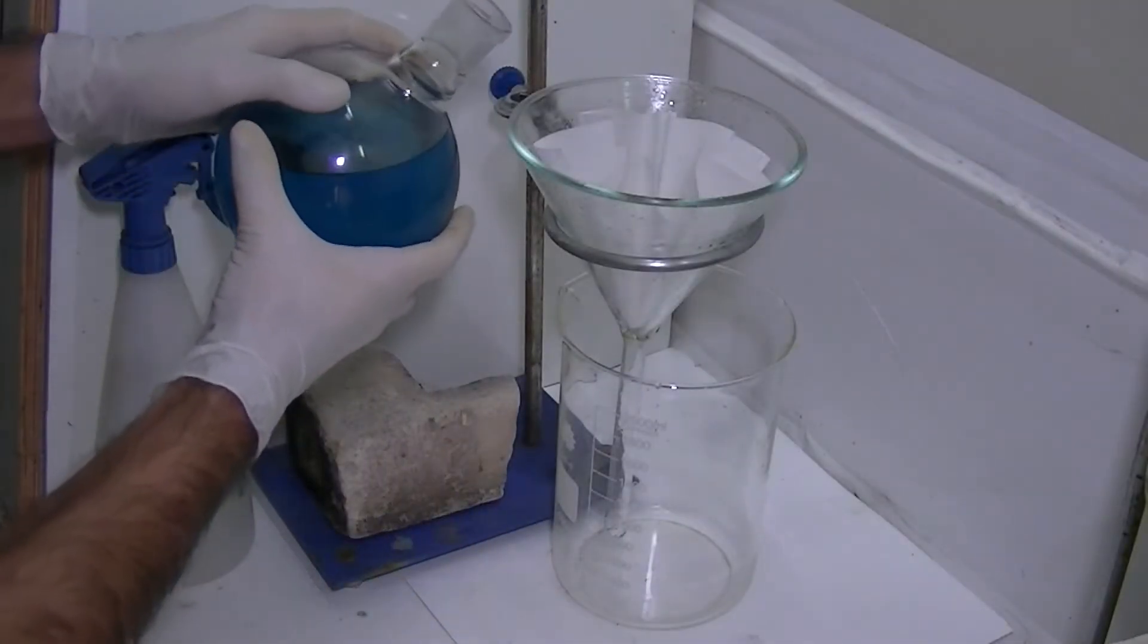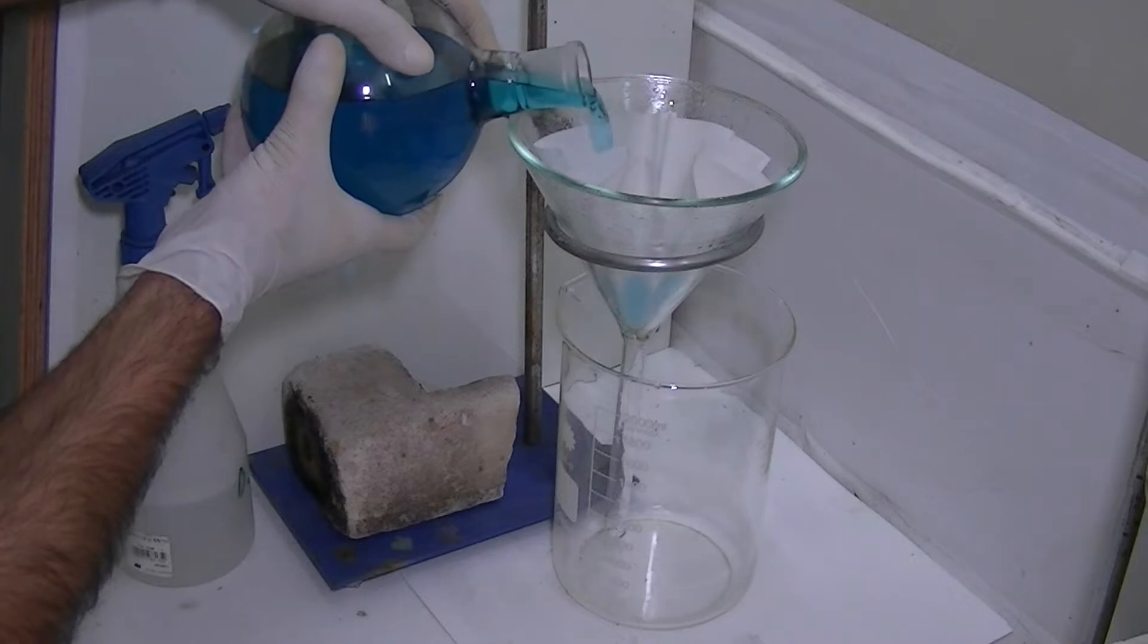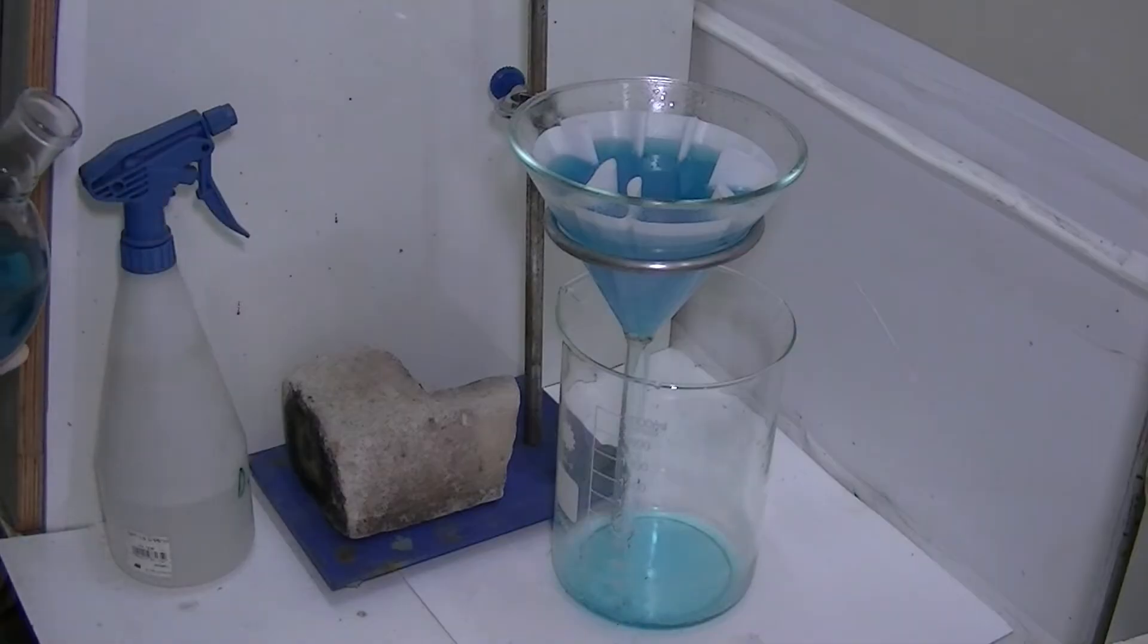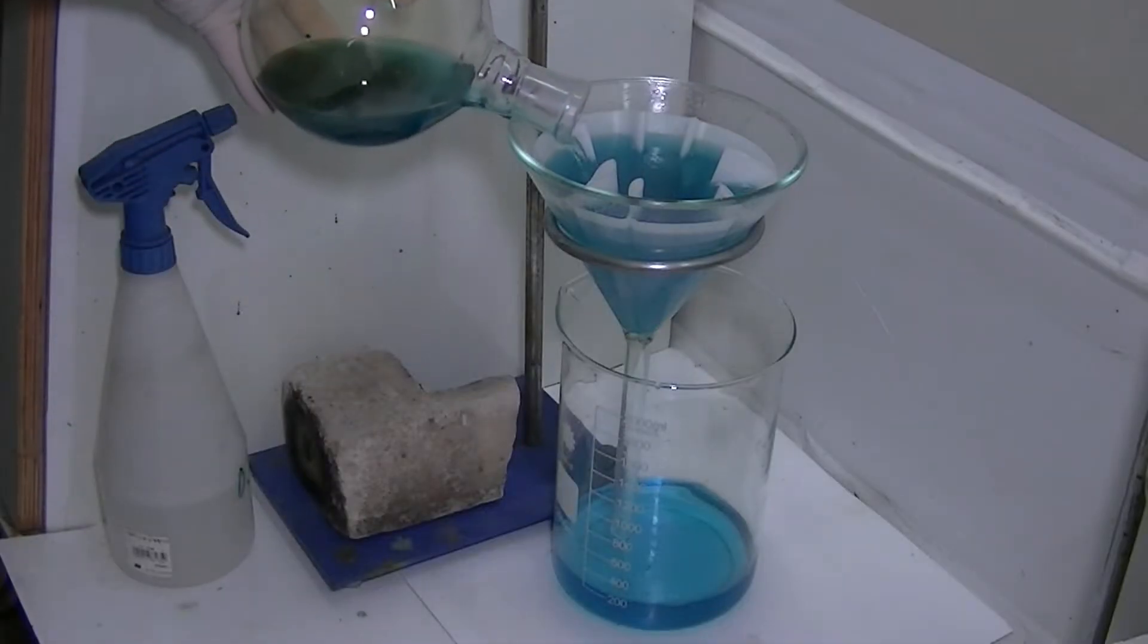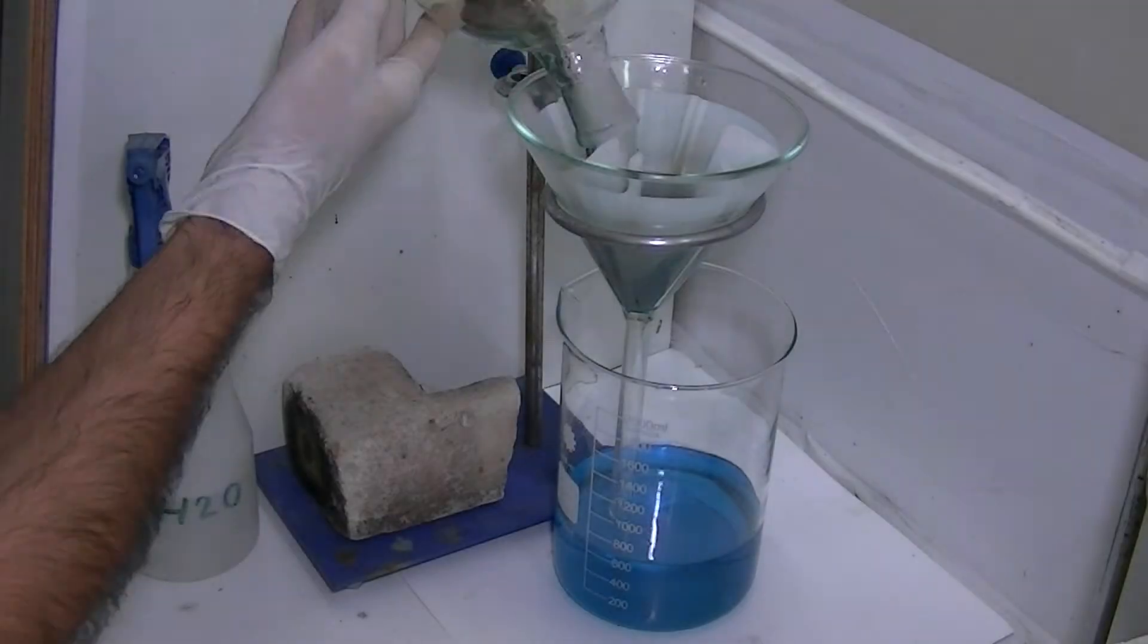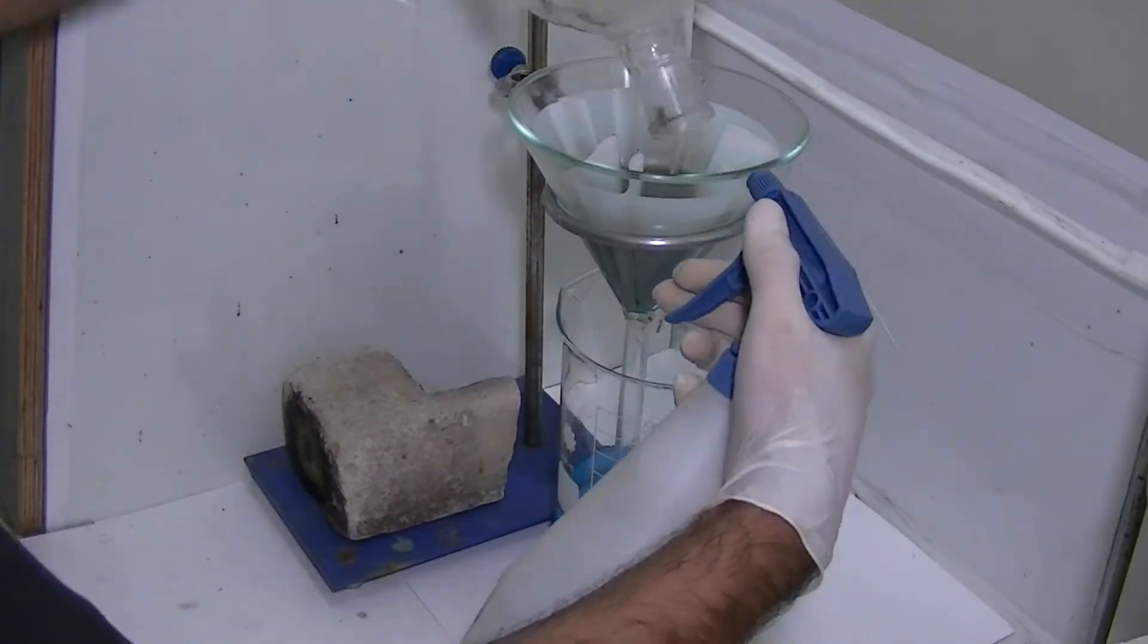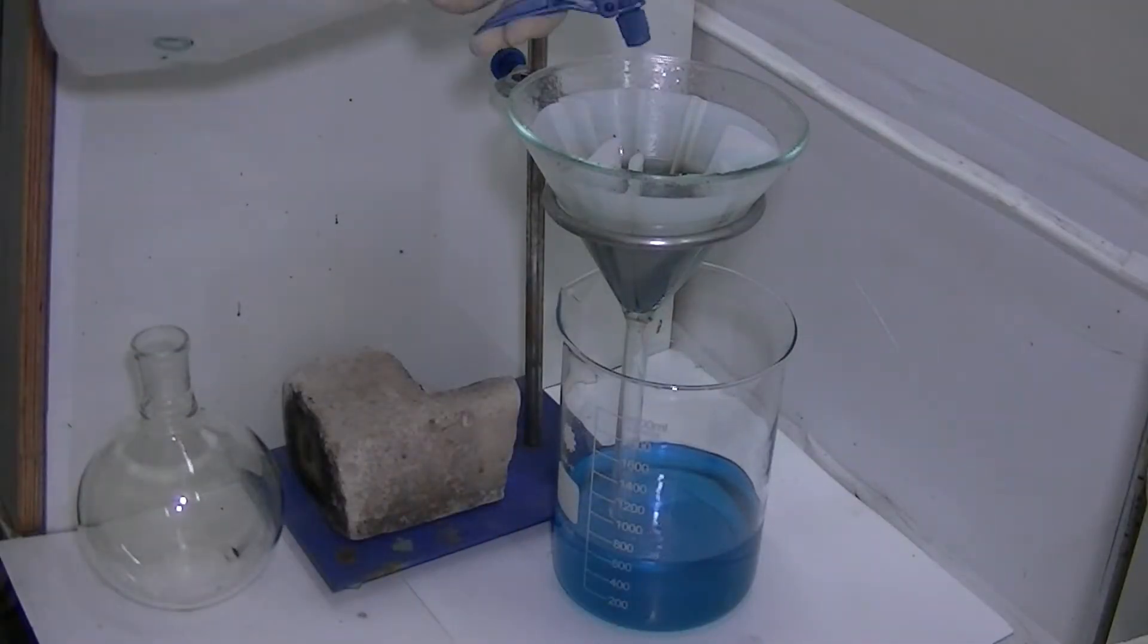First, only the supernatant is filtered as it is free of solid particles and will run down the filter very fast. Once the supernatant has passed through the filter, the sludge is drained and washed several times with distilled water to collect every drop of silver solution.